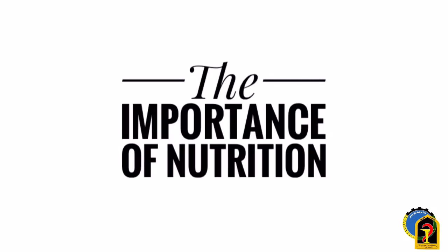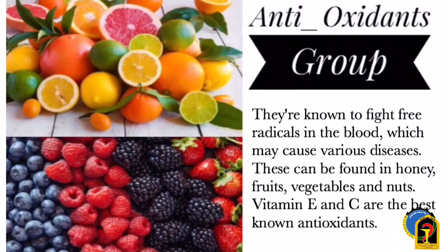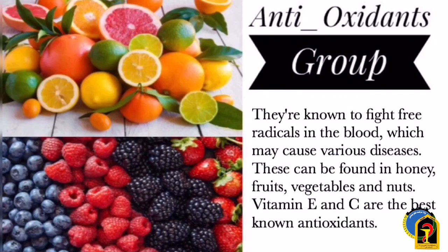What is the importance of nutrition? There are important foods and nutrients known for fighting infection. Antioxidants are known to fight free radicals in the blood, which may cause various diseases. They can be found in honey, fruits, vegetables, and nuts. Vitamin E and C are the best known antioxidants.